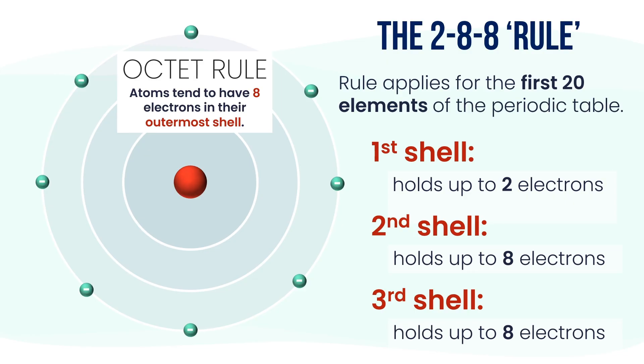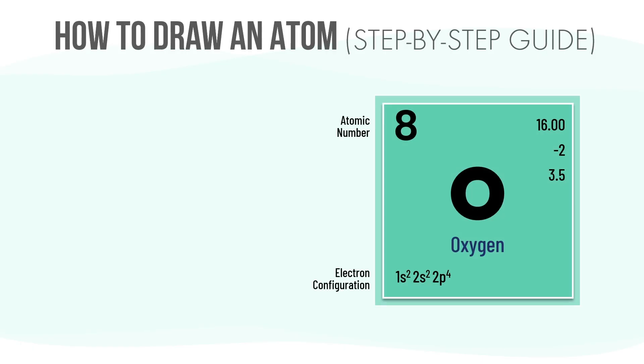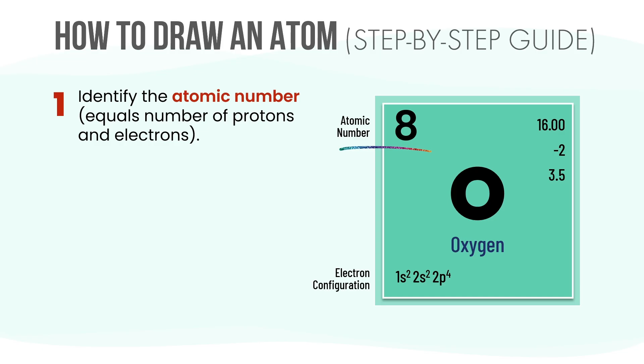Let's learn how to draw an atom step by step. We'll keep it simple and easy to follow. Step 1: Identify the atomic number of the element. This number tells us how many protons and electrons the atom has. Step 2: Draw a small circle for the nucleus, and inside you can write the element's symbol.